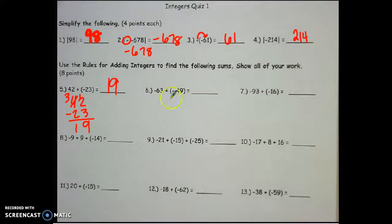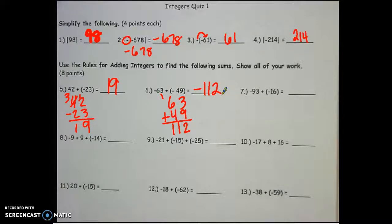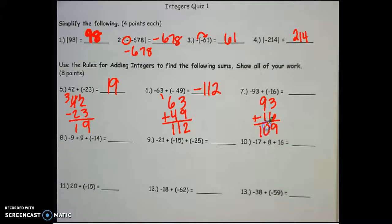For number 6, my signs are the same, so I add: 9 plus 3 is 12, 6 plus 4 is 10, plus 1 is 11. They're both negative, so my answer is negative 112. For number 7, my signs are the same, so I add: 6 plus 3 is 9, 9 plus 1 is 10. They're both negative, so it's negative 109.